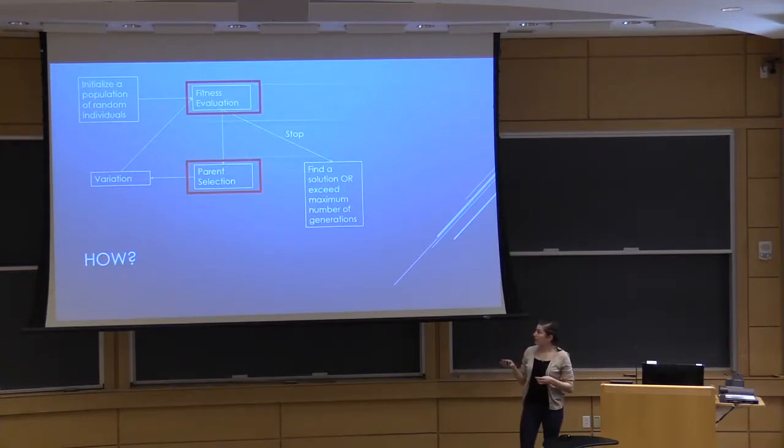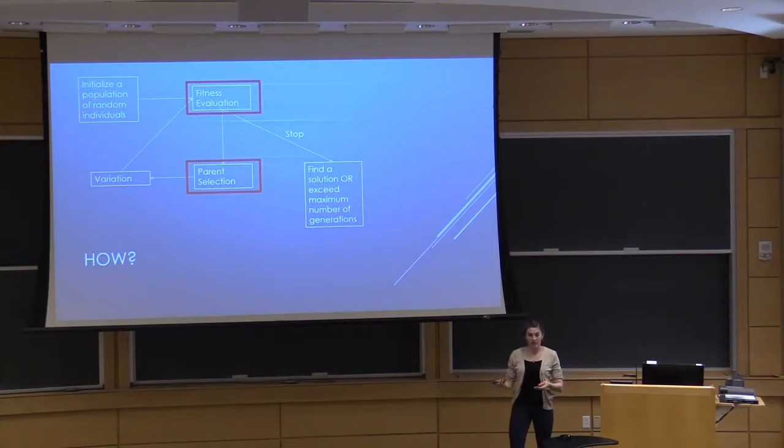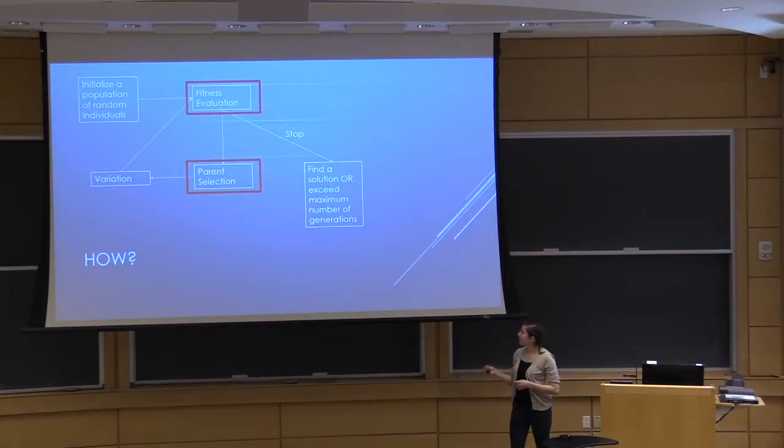What we experimented with are these two parts of the genetic programming loop: fitness evaluation and parent selection. With parent selection we used lexicase selection, and novelty search affected how we did our fitness evaluation.